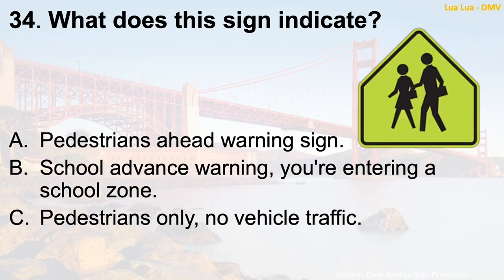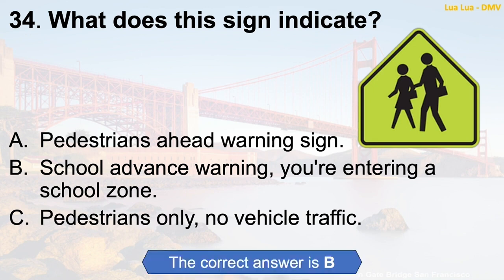Question 34: What does this sign indicate? A. A pedestrian ahead warning sign. B. School advance warning — you're entering a school zone. C. Pedestrians only, no vehicle traffic. The correct answer is B: School advance warning — you're entering a school zone.